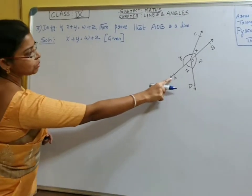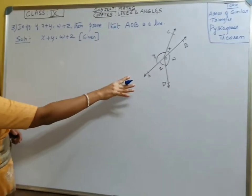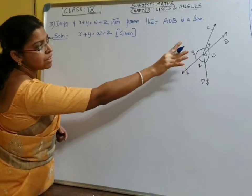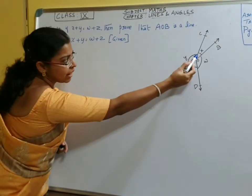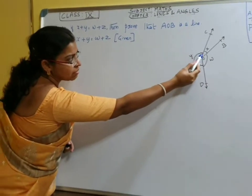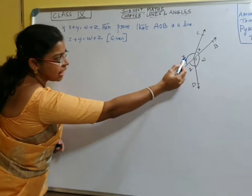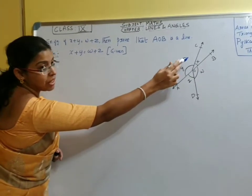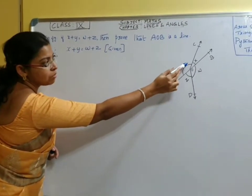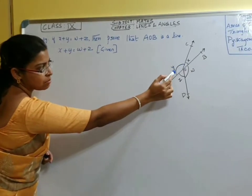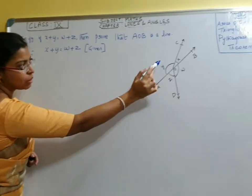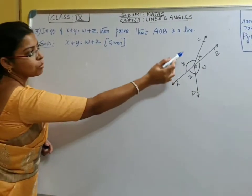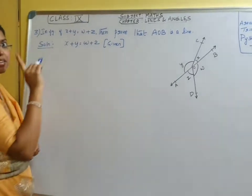We need to prove that AOB is a straight line. To prove that AOB is a straight line, if we prove that x plus y — which are the adjacent angles sitting on AOB — if we prove that the sum of angles x plus y is equal to 180 degrees, then we can say that AOB is a straight line.